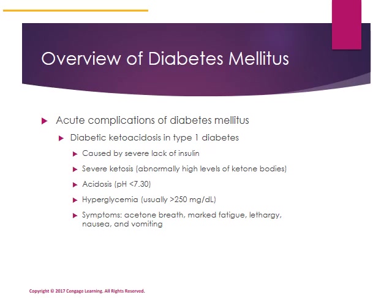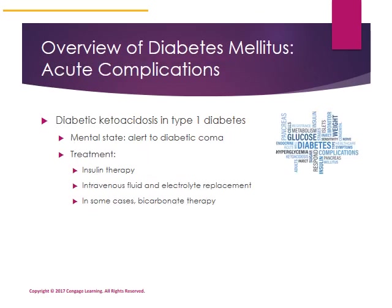Blurred vision or blindness can also occur in diabetic ketoacidosis, and this is an emergency state. It can lead to an altered mental state or diabetic coma. Treatment involves insulin therapy — potentially an intravenous insulin drip — along with fluids for dehydration and electrolyte replacement. In some cases, bicarbonate therapy may be necessary, as bicarbonate is a basic substance that can help decrease the acidity of blood fluids.